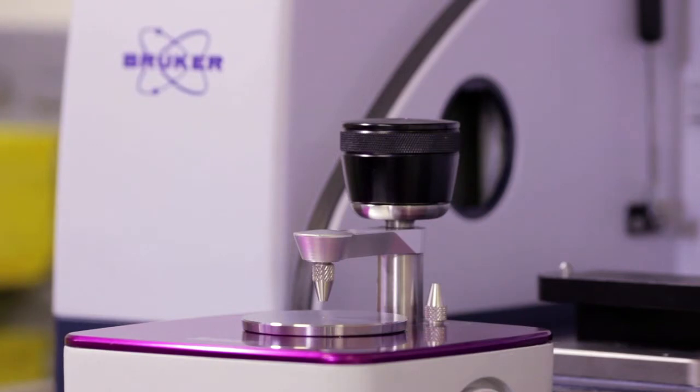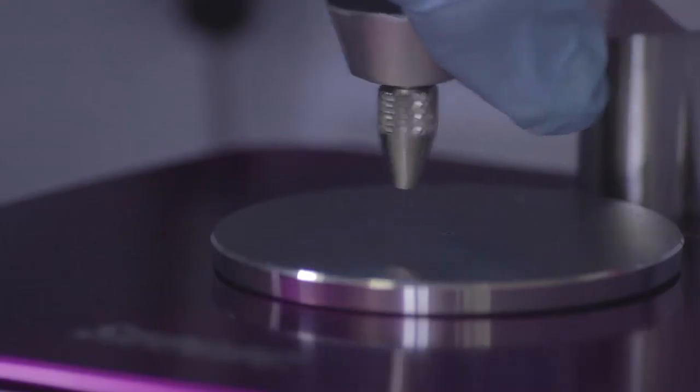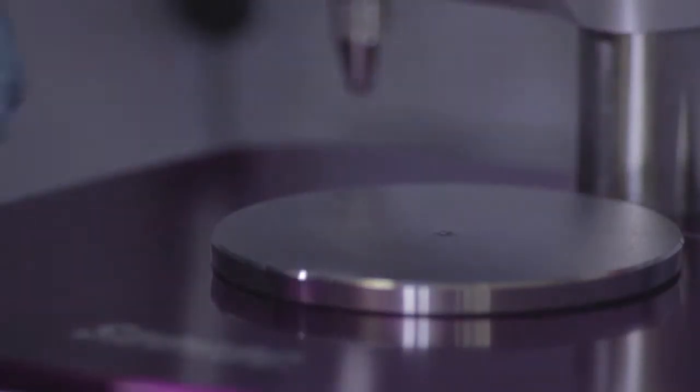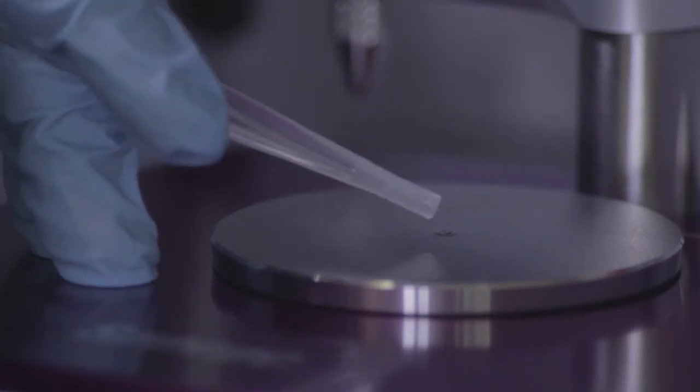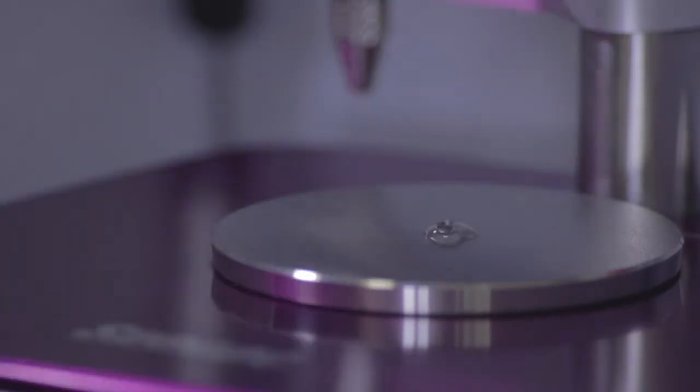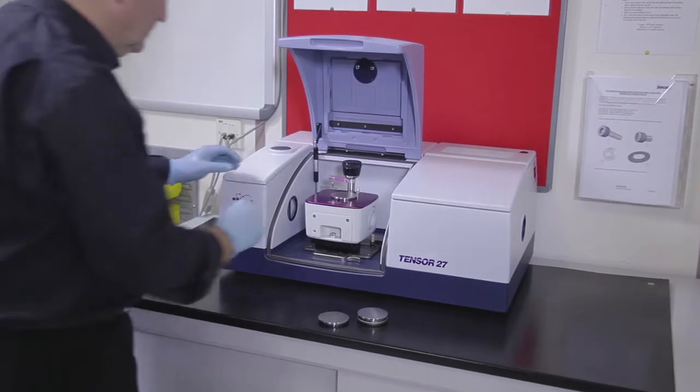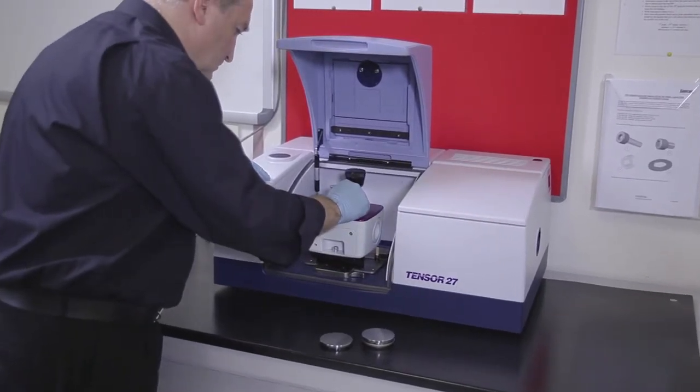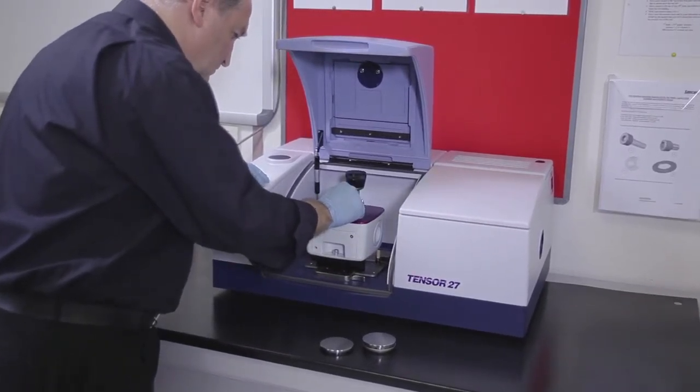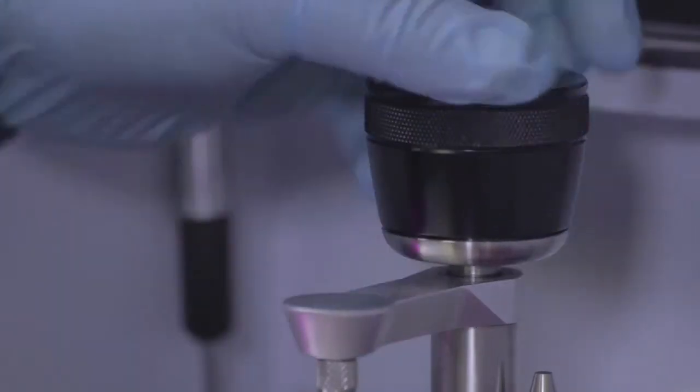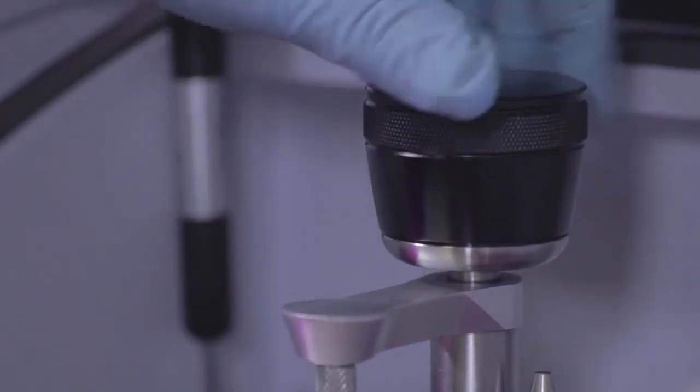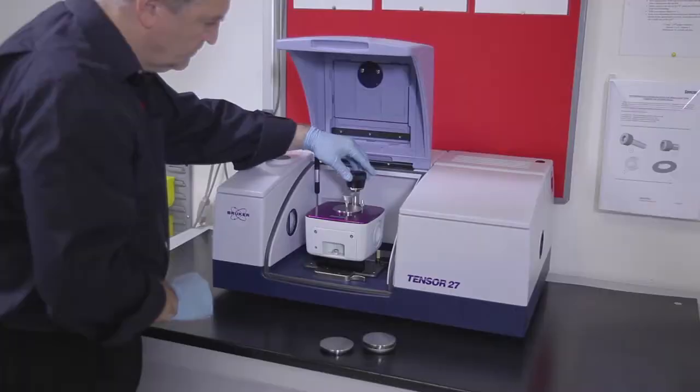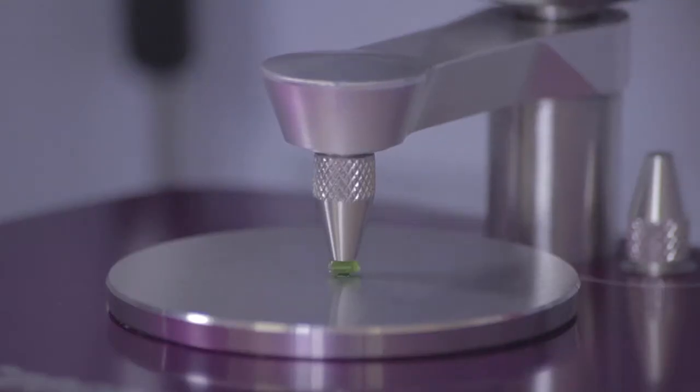The accessory is simple to use. The rotating arm assembly can be moved away to allow easy access to the top plate. Liquid samples are simply spotted onto the crystal. For solid samples, the arm assembly is turned to its sampling position and the torque screw knob turned to lower the anvil. There is an audible click when the knob has reached the preset load limit of 40 pounds.